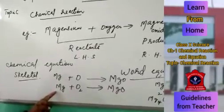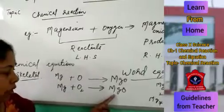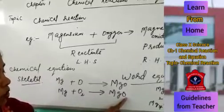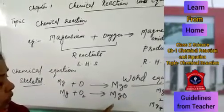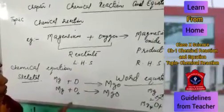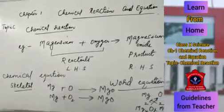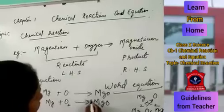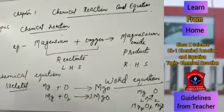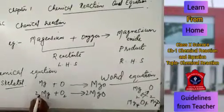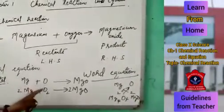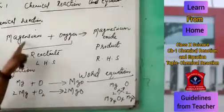Here you can see: magnesium has only one atom on the left side, and the right side also has only one magnesium atom. Oxygen has two atoms on the left side, but the right side has only one. You can equalize the number of atoms by putting a coefficient in front of the formula. In order to make oxygen balanced, I am putting 2 in front of MgO. Now magnesium is two and oxygen is also two. In order to make magnesium balanced, I am putting 2 in front of Mg. Now this equation is a balanced equation.